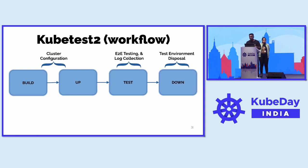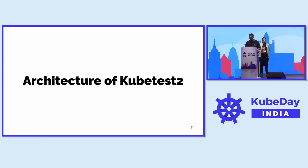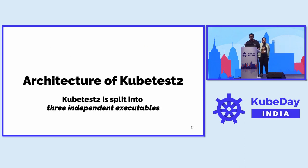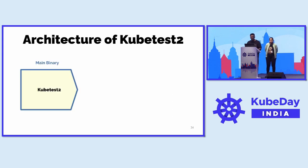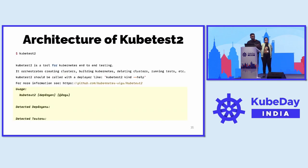Cluster configuration, end-to-end testing, test environment disposal — that's the whole. The architecture is split into three independent executables, like three legs of a tripod. The main binary is kubetest2, which we use to interact with and drive the whole thing. But on its own it does nothing — if you run kubetest2, it just says detected deployers: nothing, detected testers: nothing. Those are the missing legs of the tool.